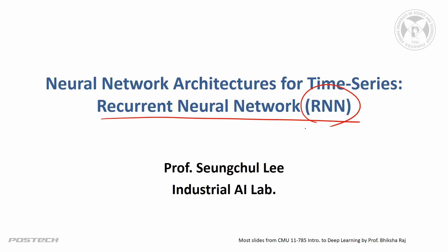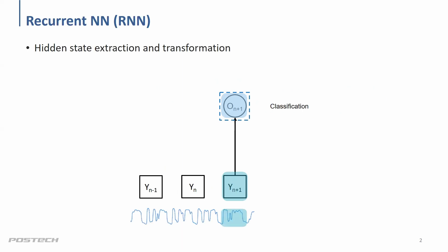The topic for today is RNN, to handle time series data. Sequence information and time information are important in many applications, and ANN and CNN are not proper ways to handle that kind of data. That's why we come up with the recurrent neural net.